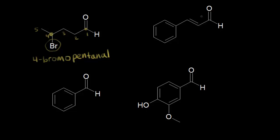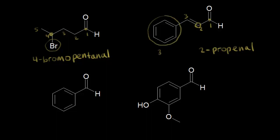Let's do this one over here on the right. We're going to number giving our carbonyl carbon the lowest number possible — so one, two, and three. We have a three-carbon aldehyde, but this one has a double bond in it. A three-carbon aldehyde would be called propanal, but since we have a double bond present, we're going to call it propenal. The double bond starts at carbon two, so we could write 2-propenal. We also have a phenyl group coming off of carbon three, so three-phenyl.